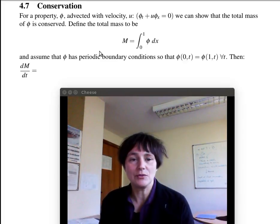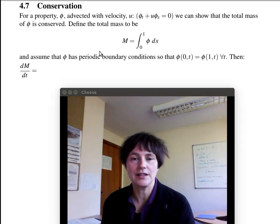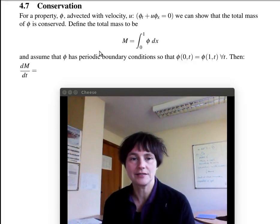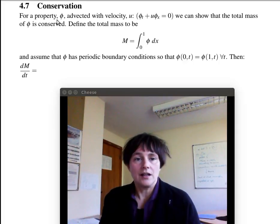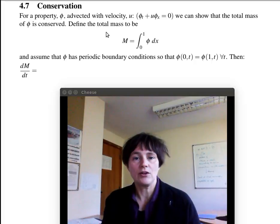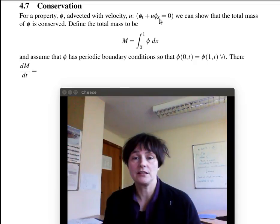Mass is the integral quantity of the dependent variable of the PDE over space. We're thinking about the advection scheme, so we assume that we have a dependent variable phi of the linear advection equation, so the rate of change of phi with time, plus the velocity, plus the rate of change of phi with space, is equal to zero.